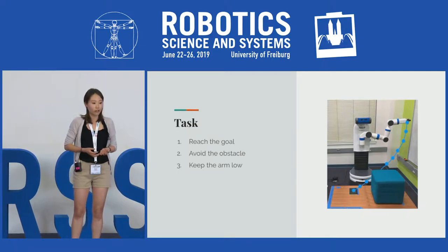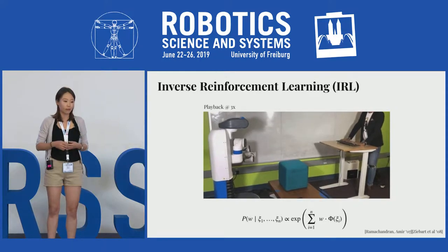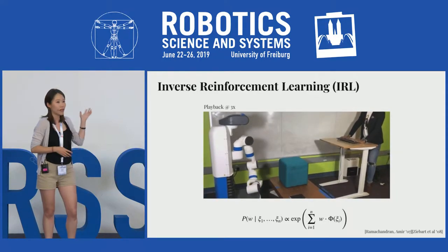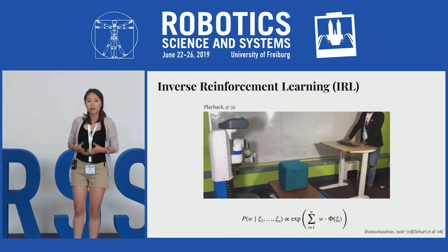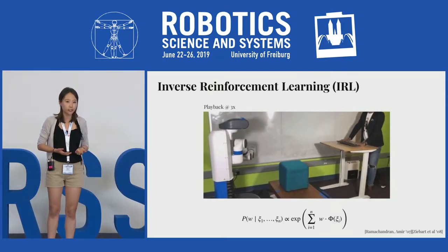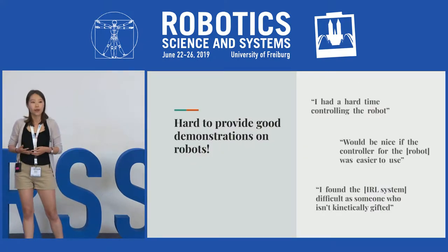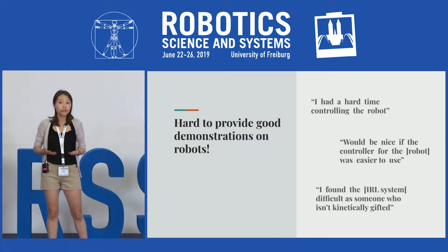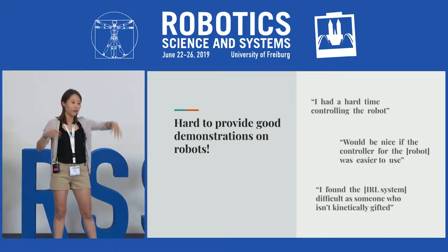One way we can learn reward functions is to use inverse reinforcement learning. In IRL, we collect demonstrations and from those demonstrations infer a reward function. You can see Andy giving a demonstration via teleoperation. However, even Andy, who has a lot of experience in this task, struggles to provide a good demonstration. When we invited people into our lab to similarly give demonstrations, many commented on how difficult it was. It's hard to provide good demonstrations on robots, especially end-effectors with high degrees of freedom.